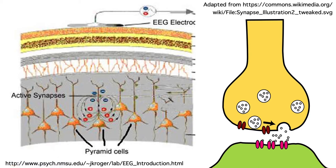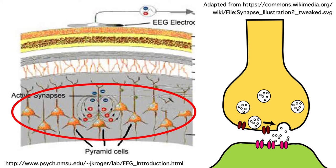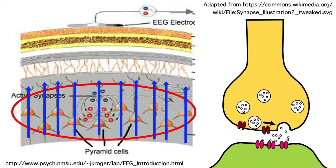Also, almost all ERPs arise from the pyramidal cells of the neocortex. Pyramidal cells are the main input-output neurons of the cortex, and they have an important geometrical property. They're all aligned perpendicular to the surface of the cortex.